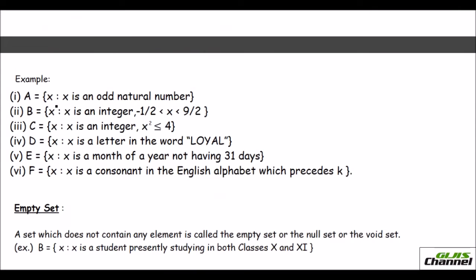So here I have given you a few examples. These are in set builder form. Let us try to put it in the roster form. So here the first one says set A has X elements where X is an odd natural number. So the common property is odd natural numbers. You know natural number starts from one. So the odd numbers you are going to list out: 1, 3, 5, 7, 9, 11, likewise it keeps going because they haven't given you up to what number. So this is the roster form of the first question.